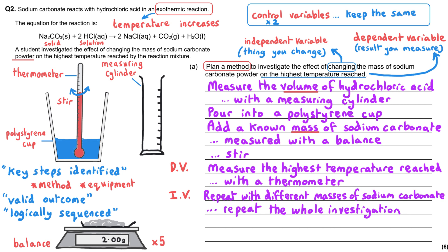Repeating the investigation allows you to spot any anomalous results — those that don't fit the general pattern — and then calculate a mean for the highest temperature reached.